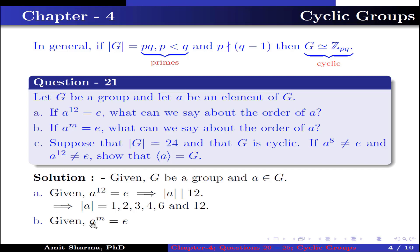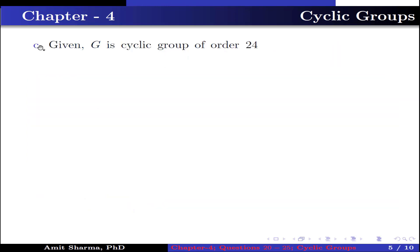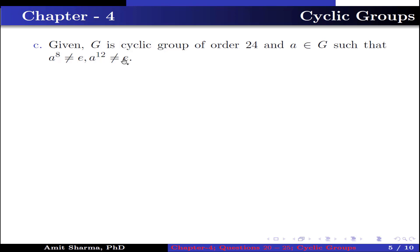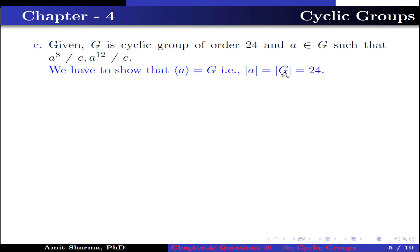Part B: given A to the power M equals identity, this implies the order of A divides M. Part C: given G is a cyclic group of order 24 and A belongs to G such that A to the power 8 is not equal to identity and A to the power 12 is not equal to identity. We have to show that G is generated by A, that is the order of A should equal the order of G, which is 24.